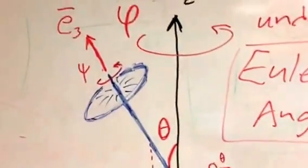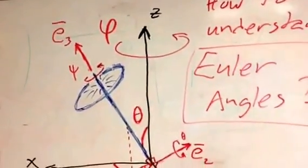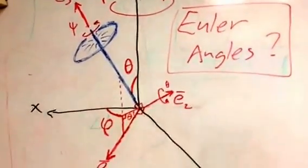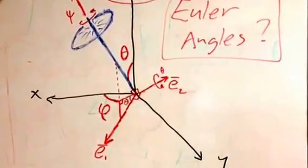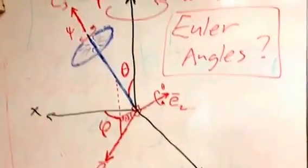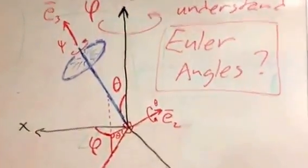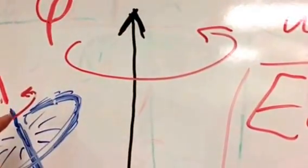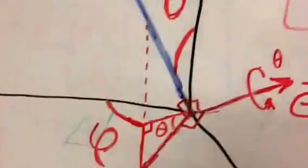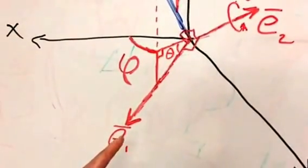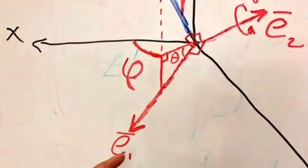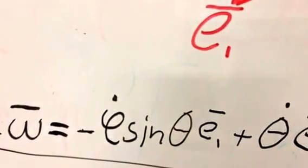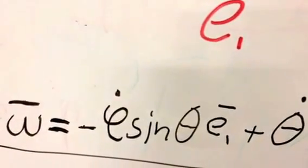But then there's another projection of this vertical axis. And it is in direction of this axis 1. And now you have, it must be a sine here. It's direction sine, sorry, sine of theta. But it's to the negative axis E1. So it must be minus phi dot sine theta E1.